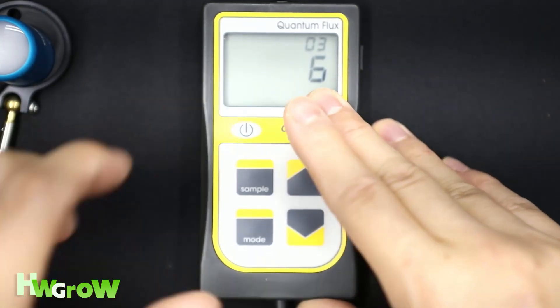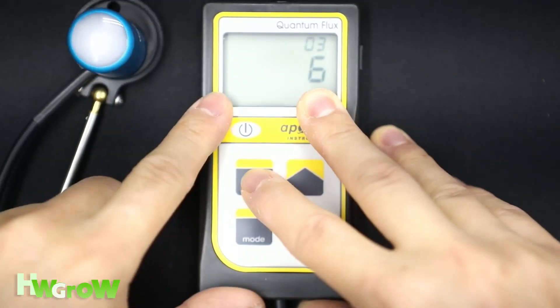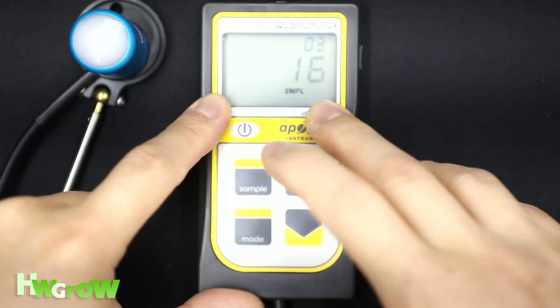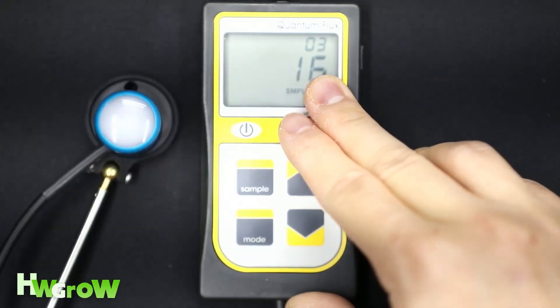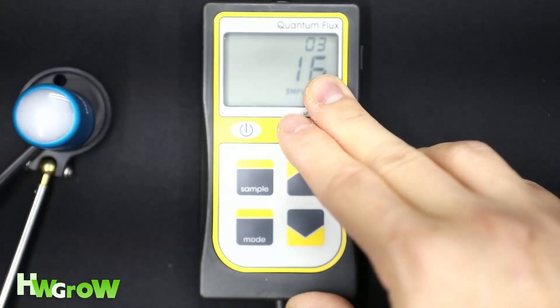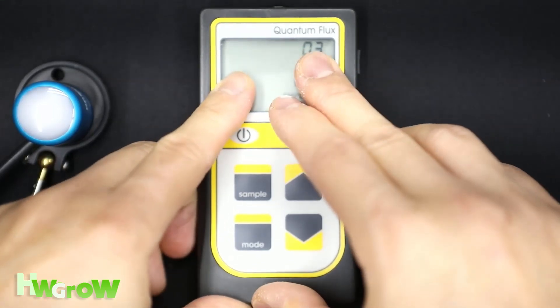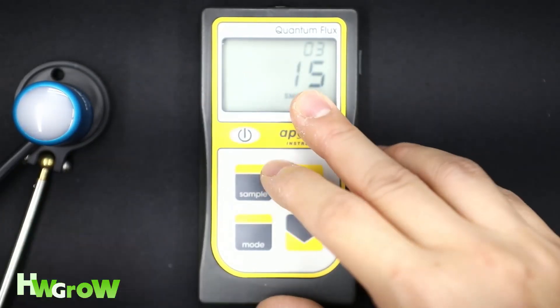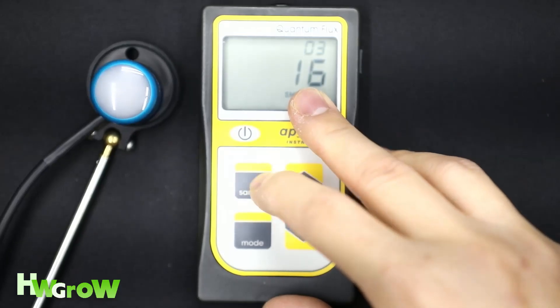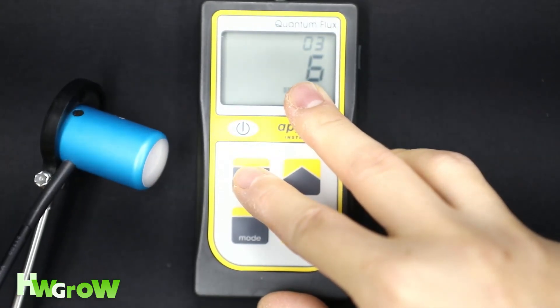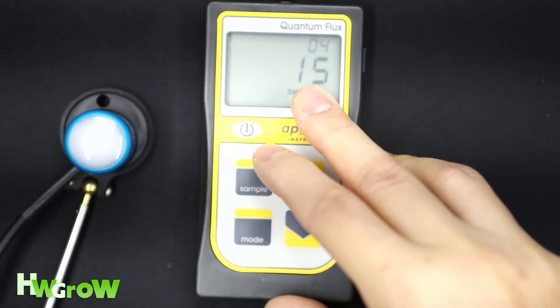To resume taking readings, you just hit sample again. So now this is recording for number four. Always know that you're recording for the number after this number on the top right. So number four slot would be, let's take six again.